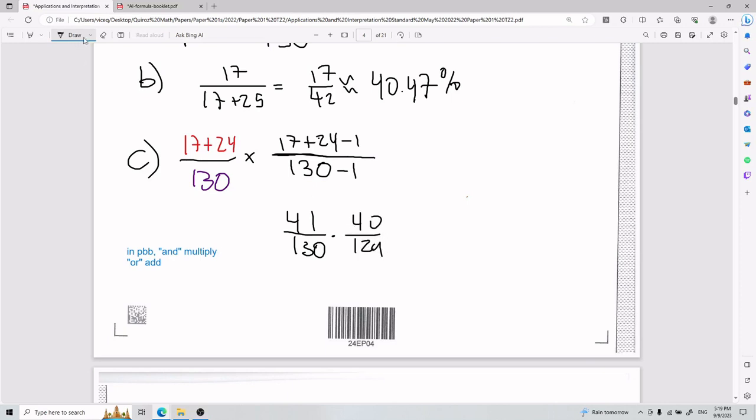So yeah, that is for part C. Notice that when you catch yourself saying and you multiply, when you catch yourself saying or you add. So this is going to be a very big number, but if you follow your calculator, it gives you this, which roughly is just going to be around 9.779%. So that is for part C and for number 2 in general.